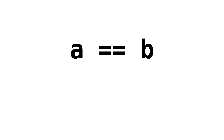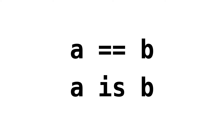You must have seen Python code where values are compared with the equality operator. But sometimes the 'is' keyword is used. What do they do, and when should you use one or the other? Here is the answer.